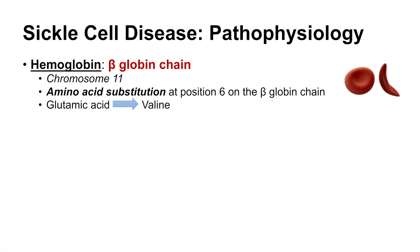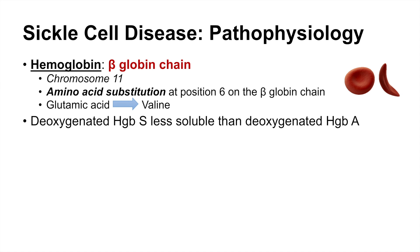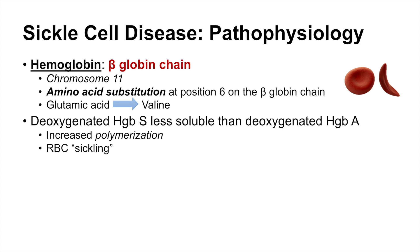The problems in sickle cell disease are all due to a single point mutation. When this beta globin chain is mutated, we consider it hemoglobin S. Deoxygenated hemoglobin S is less soluble than deoxygenated hemoglobin A, the normal hemoglobin. So whenever hemoglobin is deoxygenated, it can lead to increased polymerization — hemoglobin S can start to aggregate and accumulate together. This leads to RBC sickling; deoxygenated hemoglobin S can lead to RBC sickling.